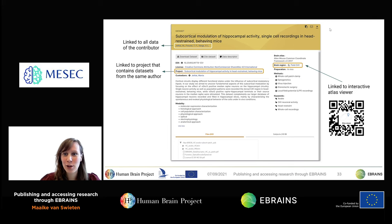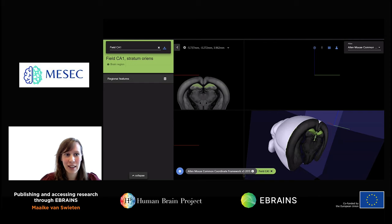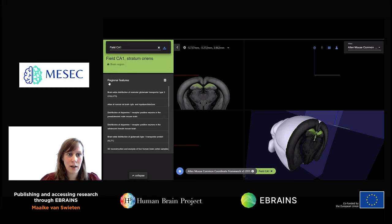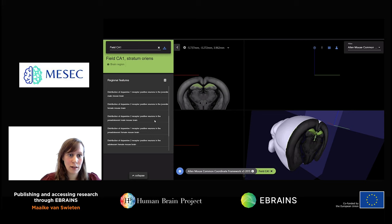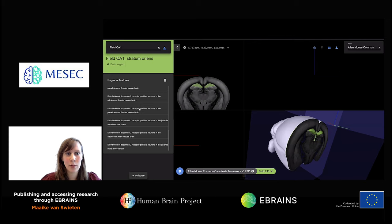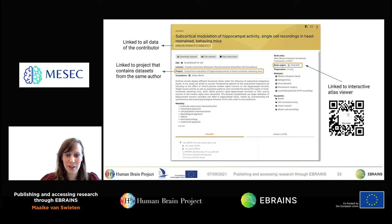In the Atlas view, you can see that the dataset is linked to the CA1 field of the hippocampus, and in the Atlas, all datasets linked to this region can be found under regional features. This brain area has a number of related datasets, making it a way of linking your dataset with others. In the next session this morning, you will hear more about the interactive Atlas Viewer, so I will not go into too much detail.